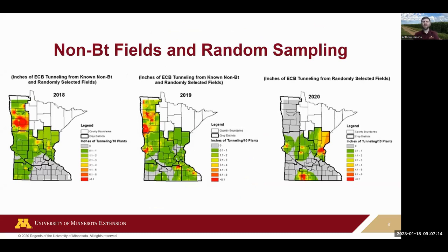We also look at tunneling — inches of tunneling — and in non-BT fields that's one of our good metrics. We can see higher populations in non-BT fields, obviously, where you don't have corn borer controlled; it's a bit of a refuge for non-resistant insects. Resistance to BT traits has been documented in other parts of North America and Canada, but we haven't found any in the U.S. so far. In BT fields, that's where we'd be concerned about resistance emerging — that's why we do this monitoring.